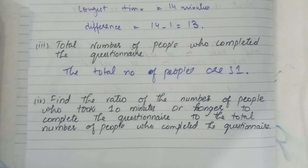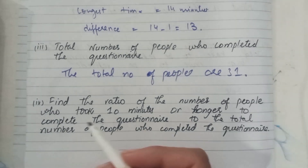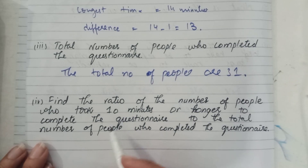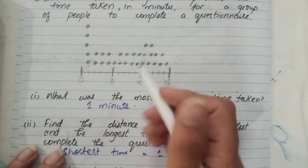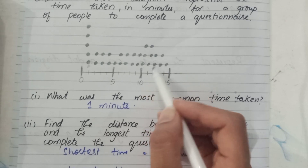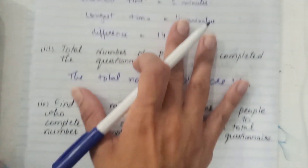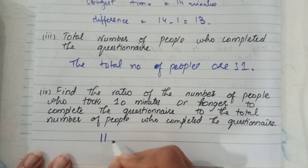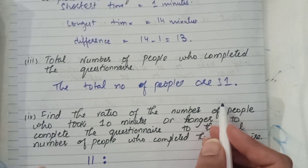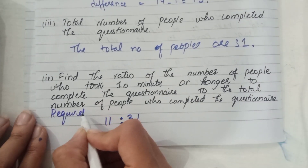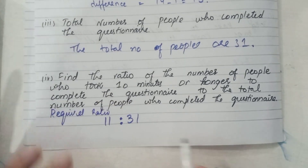Part four: find the ratio of the number of people who took 10 minutes or longer to the total number of people. We count from the dot diagram those who took 10 minutes or longer: 1, 2, 3, 4, 5, 6, 7, 8, 9, 10, 11 — these are 11 people. The total is 31, so the required ratio is 11 : 31.